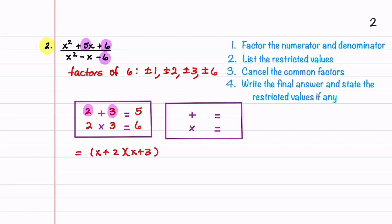To factor the denominator, we need to find two numbers that add up to minus 1 and multiply to get minus 6. Looking at our list of factors, these numbers are minus 3 and 2, because they add up to minus 1 and multiply to give minus 6. We can then write the factorization in the denominator as x minus 3 times x plus 2.